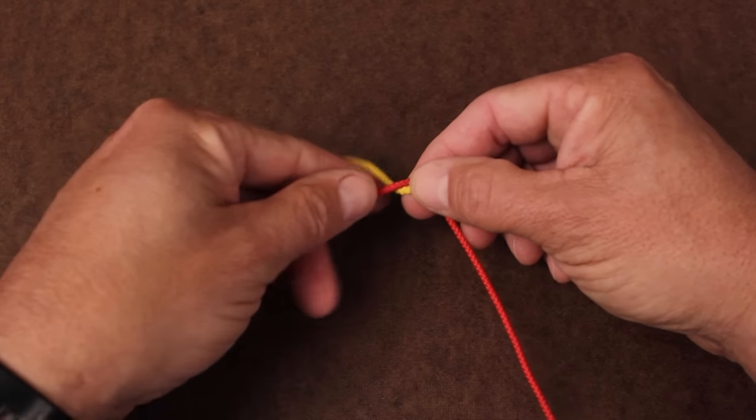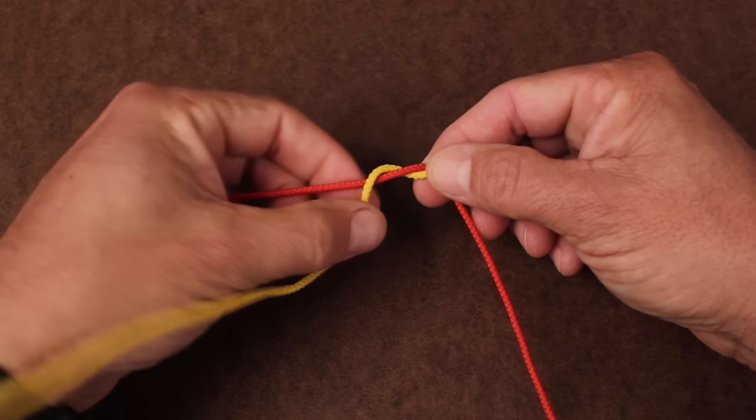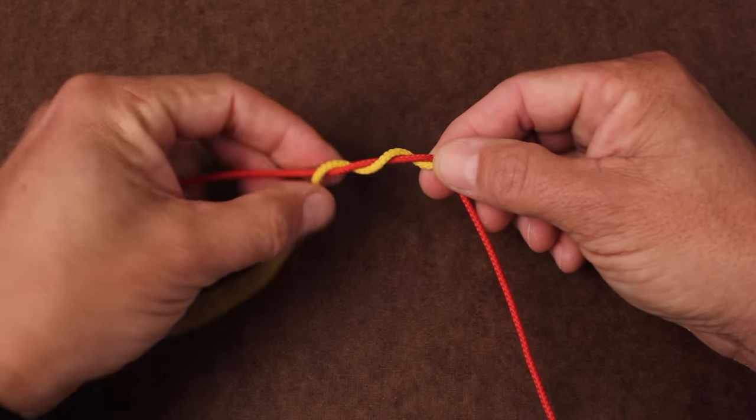Begin wrapping so when the tag end of the lighter material is pointed up, it's being wrapped toward you. Take 4 wraps in this manner. More about the number of wraps later.